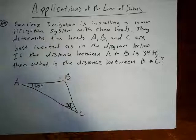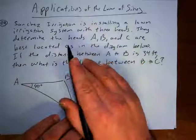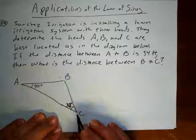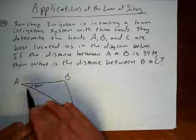So this one says the Sanchez Irrigation is installing a lawn irrigation system with three heads. And they've found that it's best to place them at these three points. They label one A, B, and then C. They label the three points of that. And then here's a diagram. So the three points are arranged. So you have a 40 degree angle here, a 38 degree angle there.